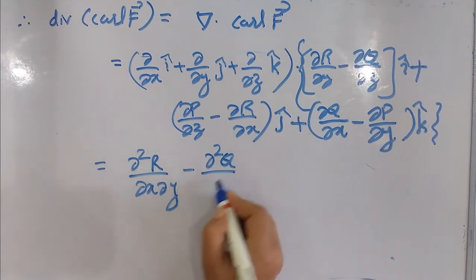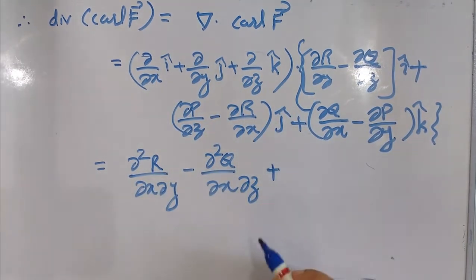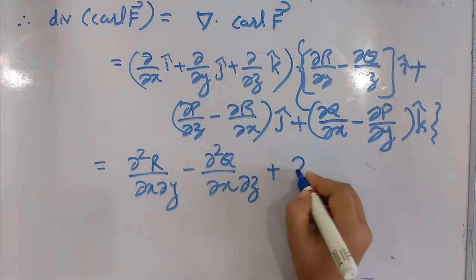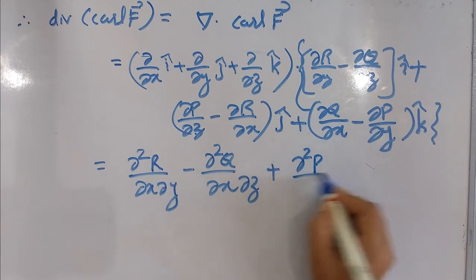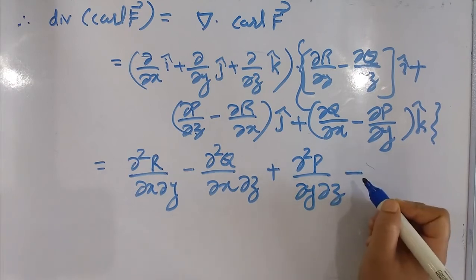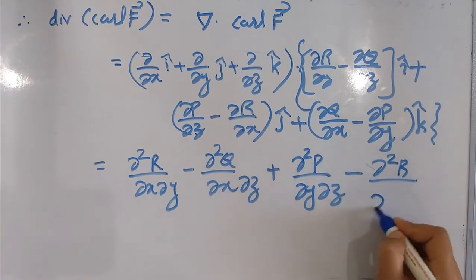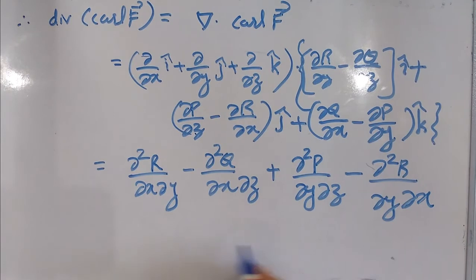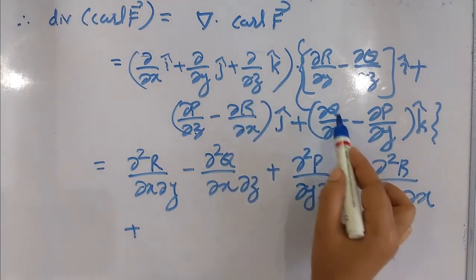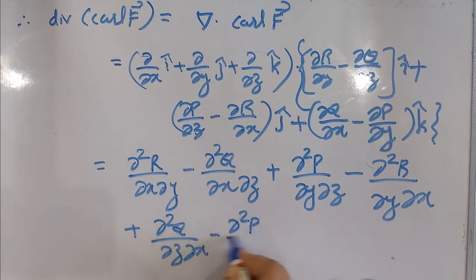Expanding the divergence gives terms: ∂²R/∂x∂y − ∂²Q/∂x∂z, plus ∂²P/∂y∂z − ∂²R/∂y∂z, plus ∂²Q/∂z∂x − ∂²P/∂z∂y.